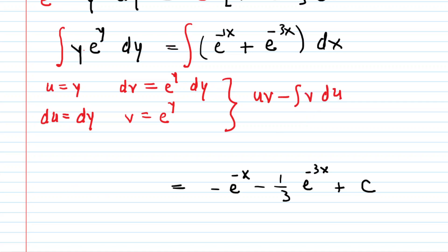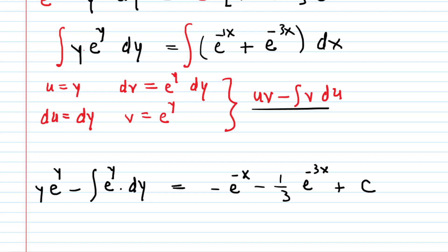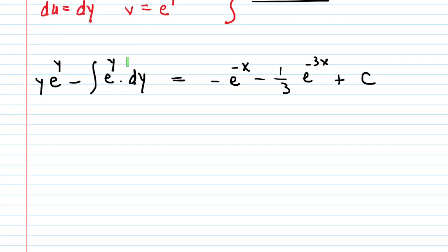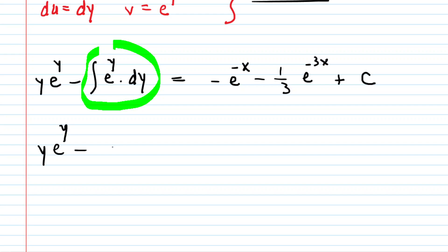So on the left side, following the formula, we take our u, which was y, multiplied by v, which is e to the y, minus the integral of v, which is e to the y, times du, which is dy. We can finish integrating the left side by performing this last integral: the integral of e to the y is simply e to the y. So the left side evaluates to y times e to the y minus e to the y.